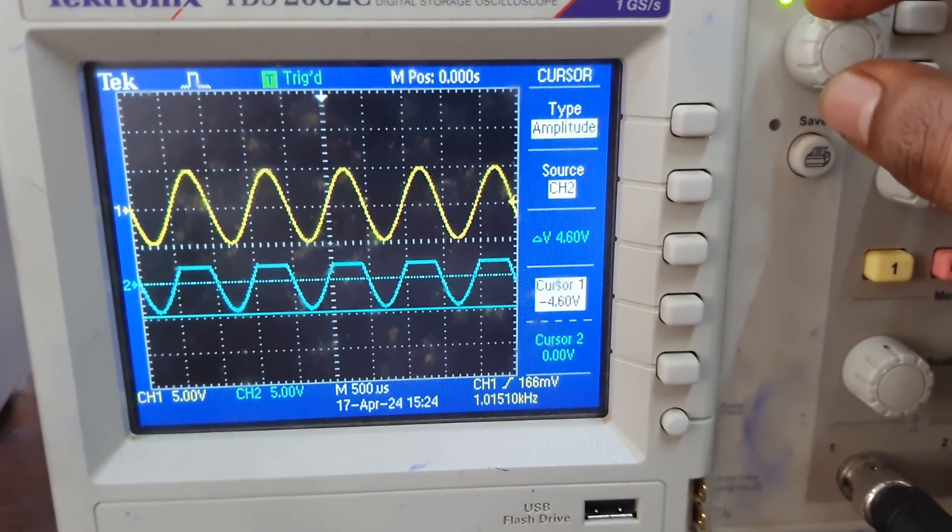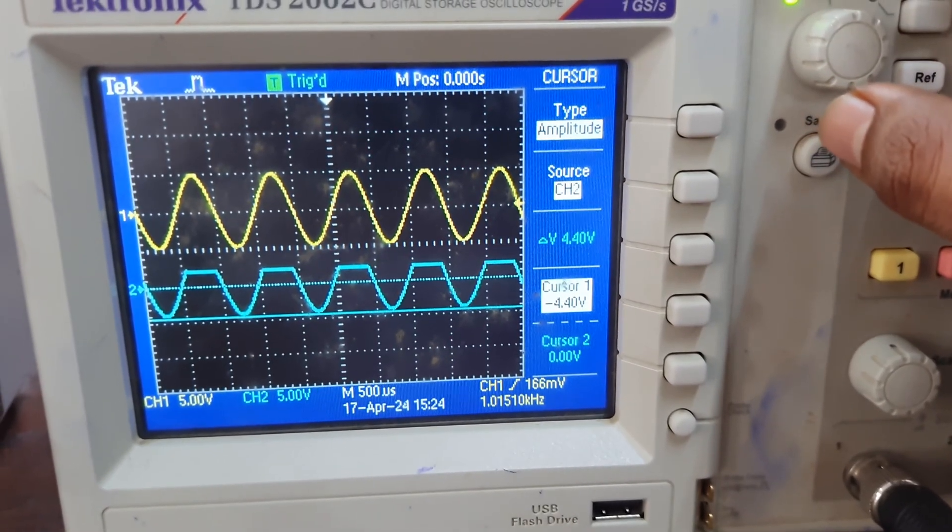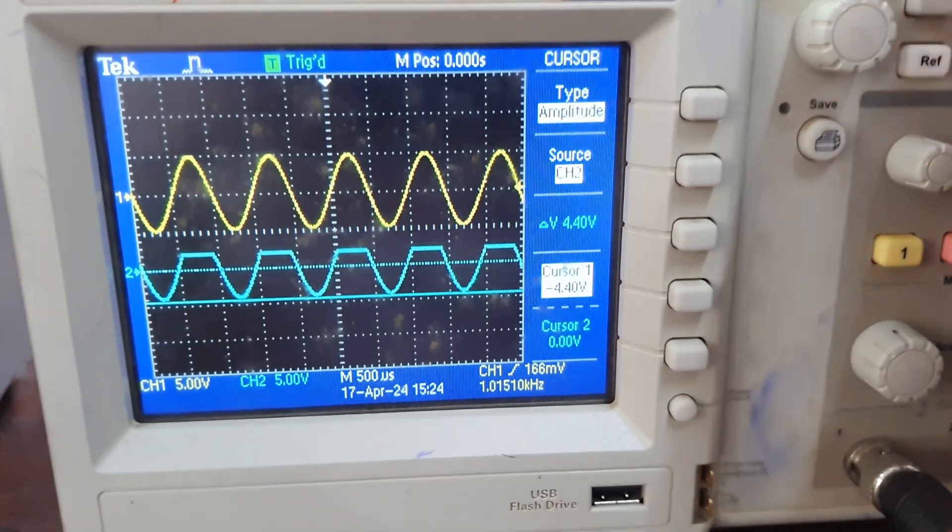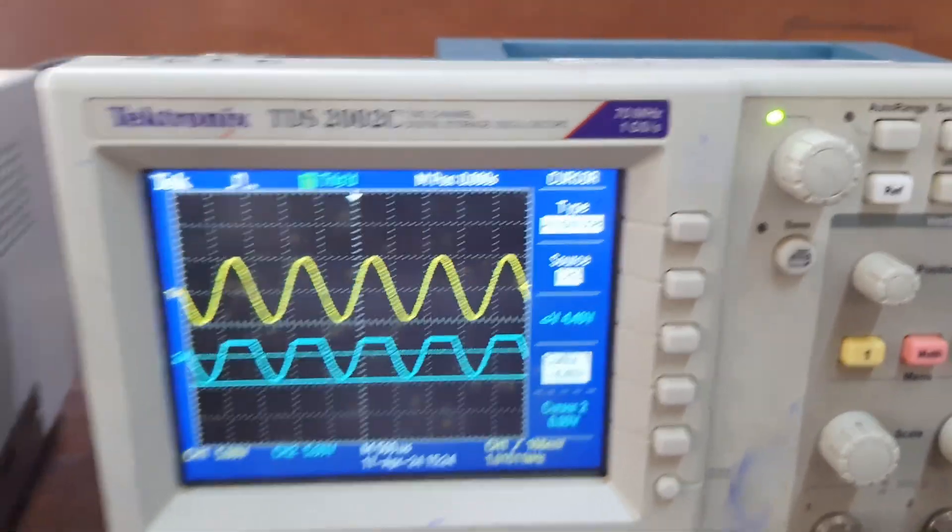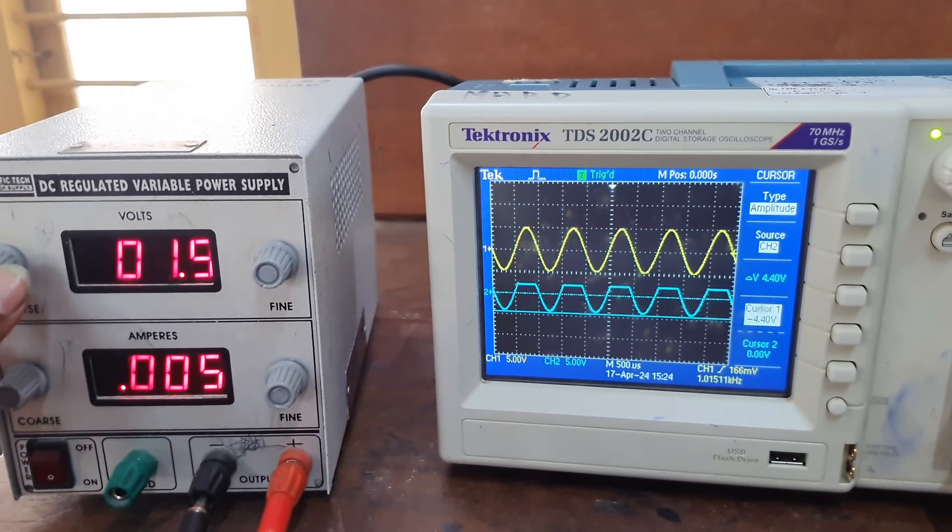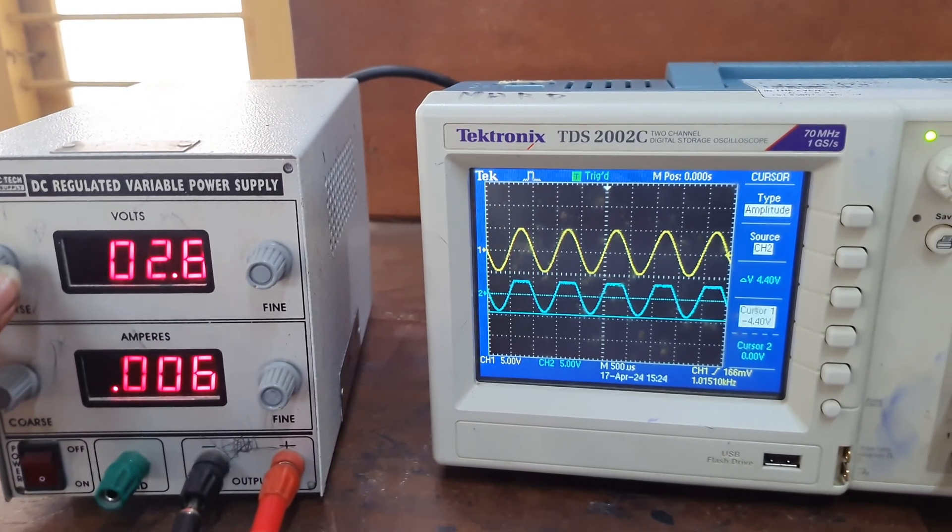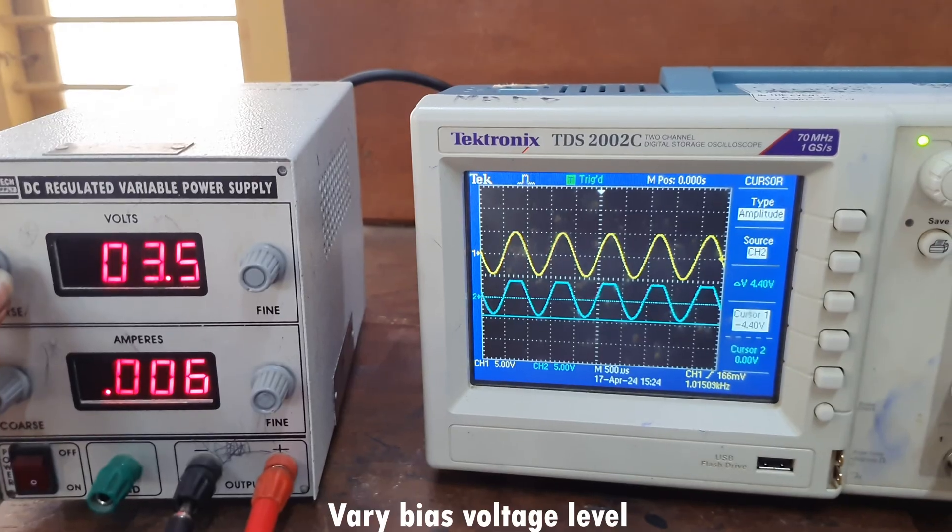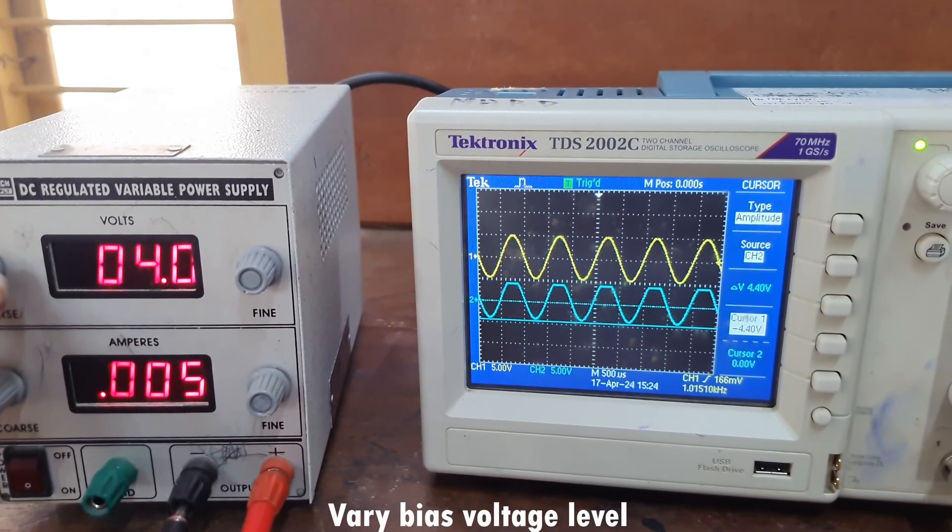So up to 2 volts of the input waveform during its positive half cycle, the output traces the input. The entire negative half cycle and positive half cycle up to 2 volts will be available at the output.